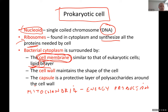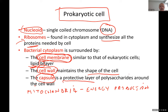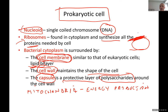Through evolution, bacteria evolved additional layers on top of the cell membrane. First is the cell wall, which helps maintain the shape of the cell. Then there is the capsule — the outermost protective layer of polysaccharides. So there are three layers outside for prokaryotic cells.